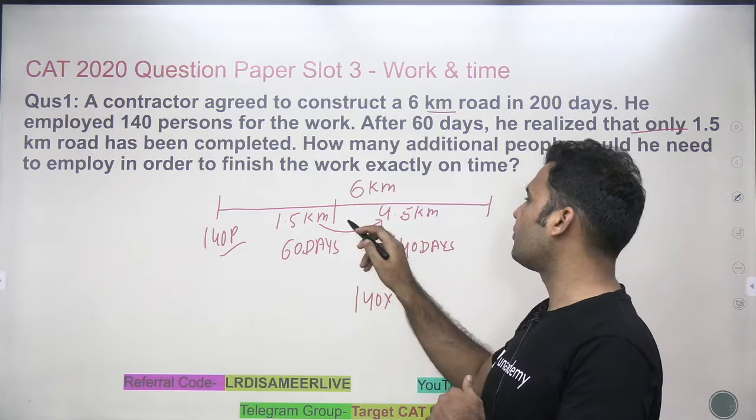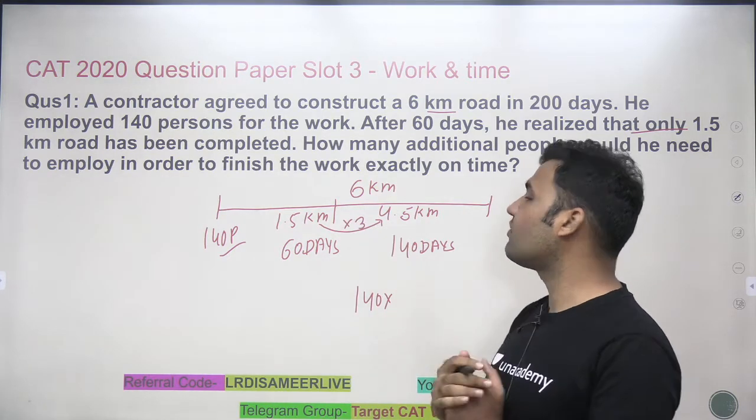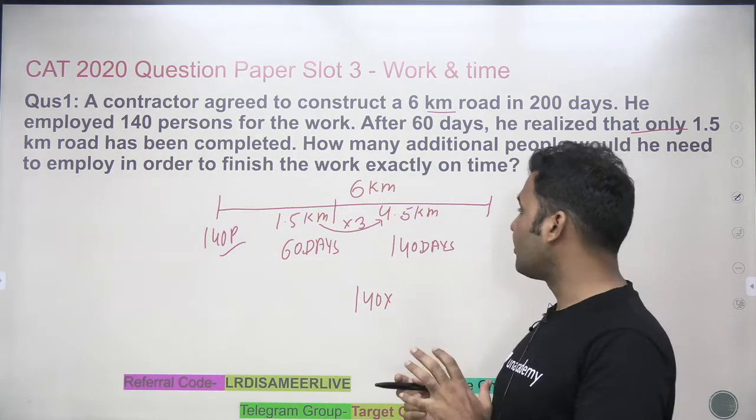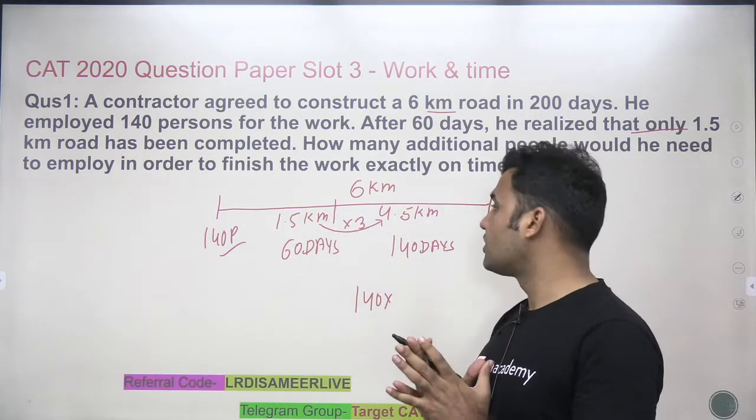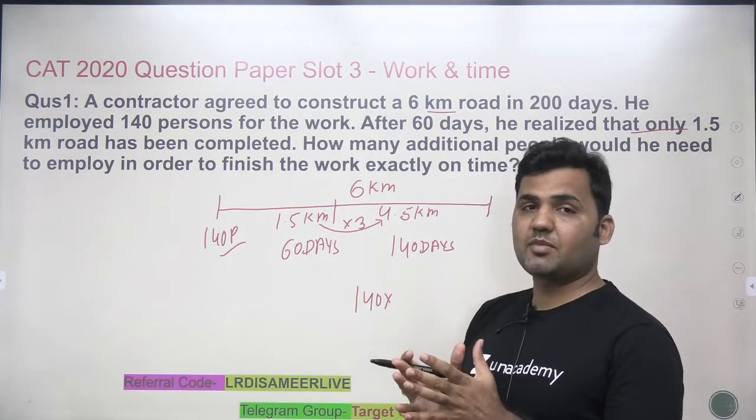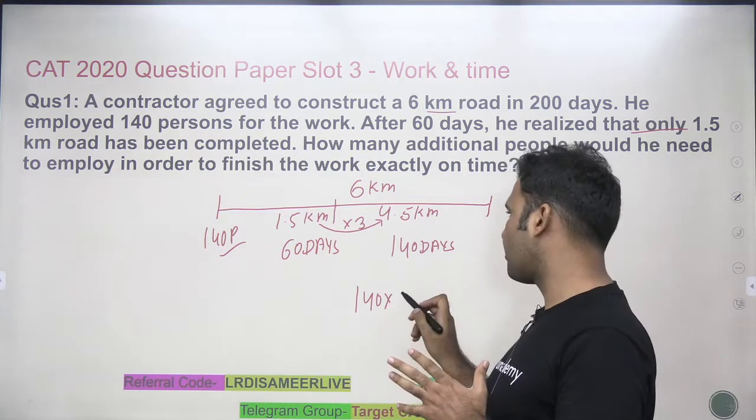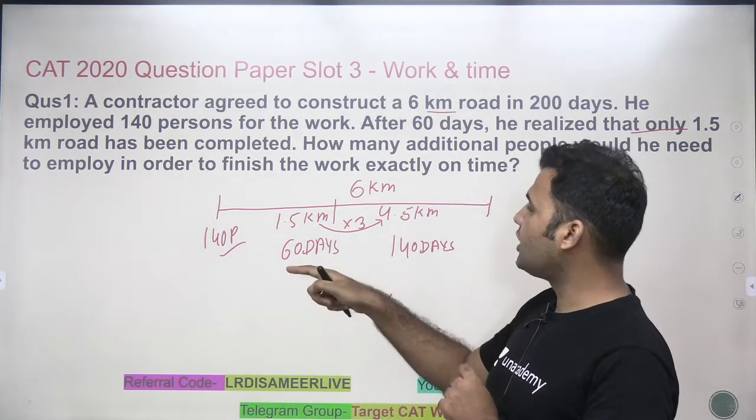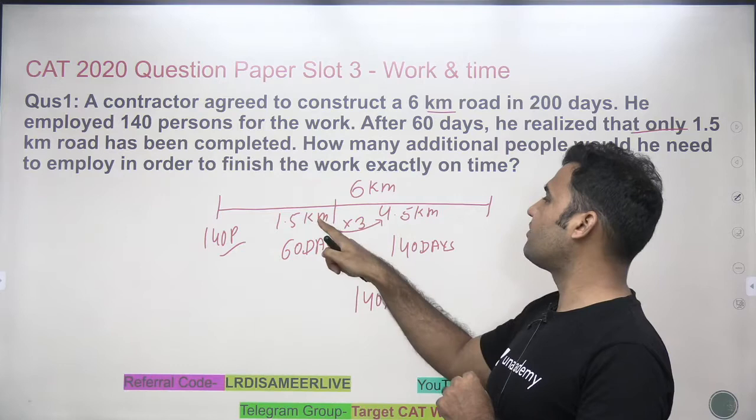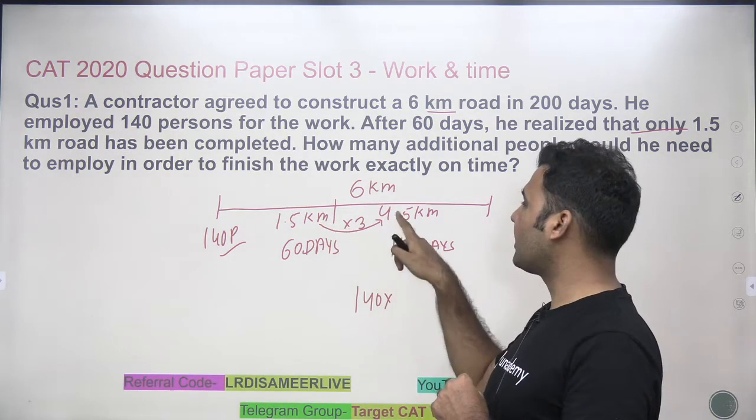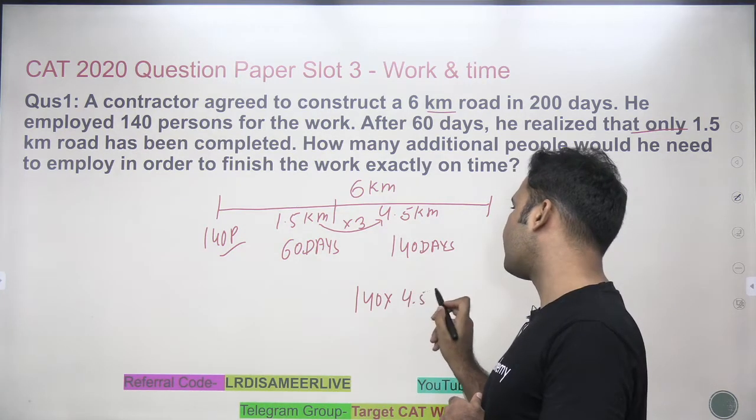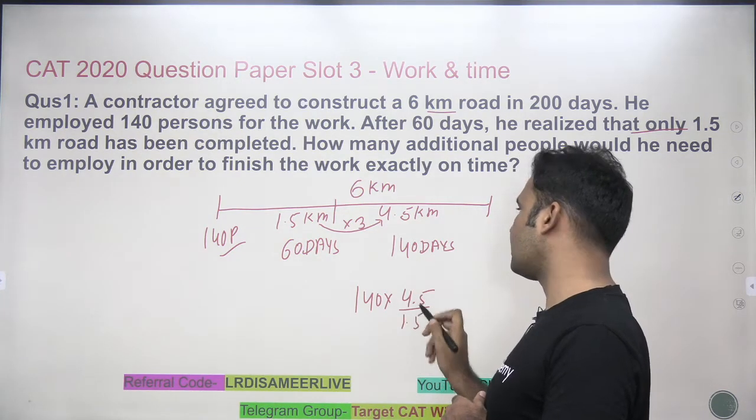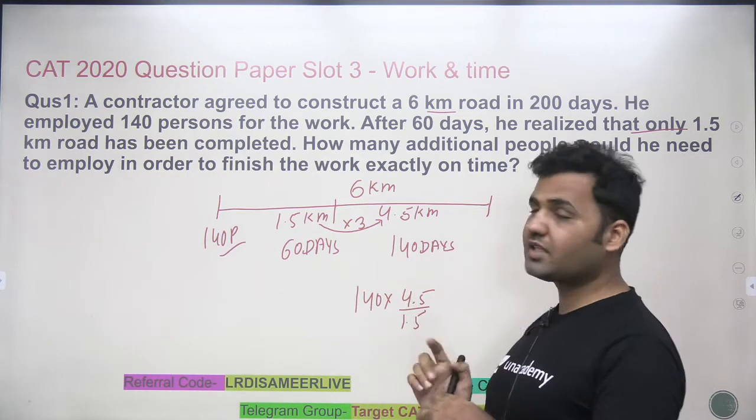1.5 kilometer work is getting 4.5 kilometer work. That means now these 140 people are supposed to do more work. So if you have to do more work, that means you will require more number of persons. So the number of people will get increased. In which ratio will it increase? The multiplying factor that you have to do more work, that is the multiplying factor you have to do in 140 persons. This is getting 3 times, so this will also get 3 times.